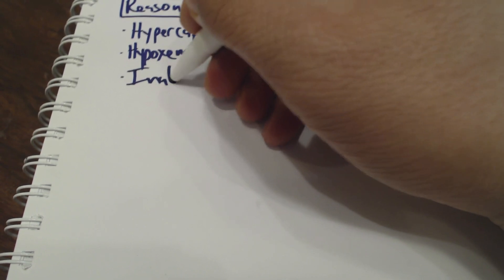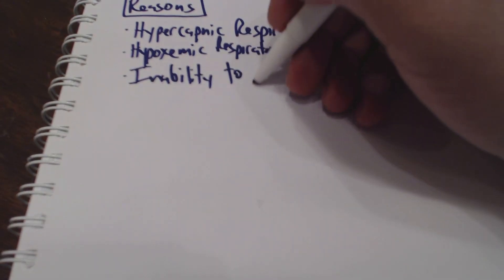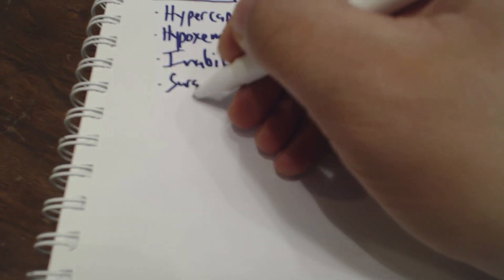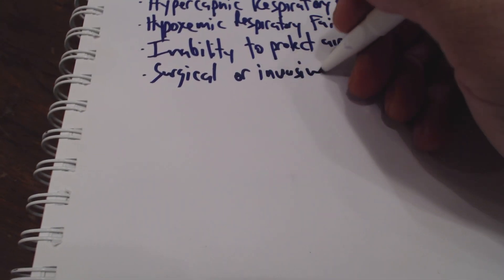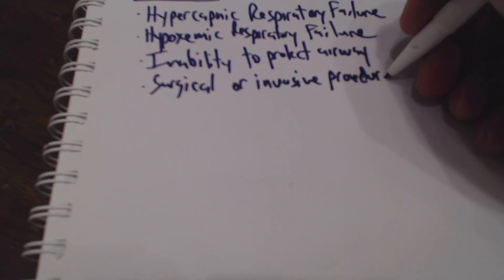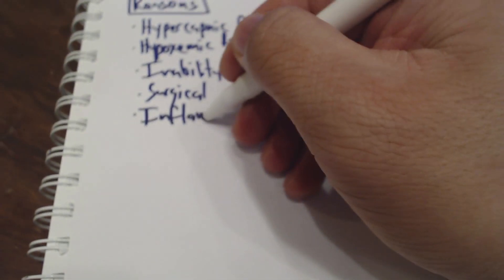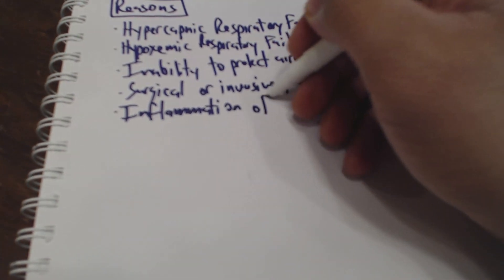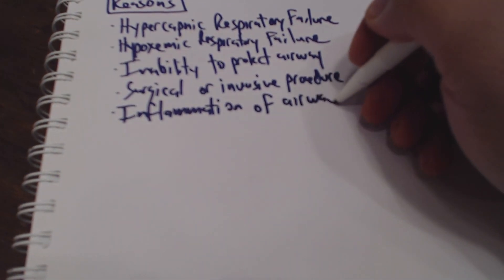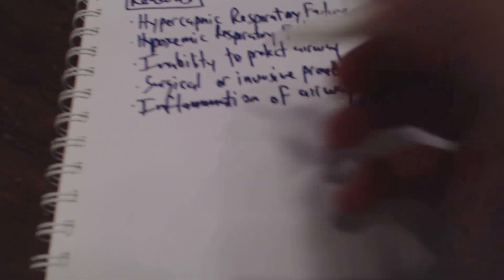We also have the inability to protect the airway as a reason, if a patient has a weak or absent cough or gag. Another reason is an imminent surgical or invasive procedure — if a patient is about to have surgery and will be under general anesthesia, we're going to want to take over their breathing and ventilation. Additionally, inflammation of the airway, such as in asthma exacerbations with mechanical blockage, warrants putting in an artificial airway.